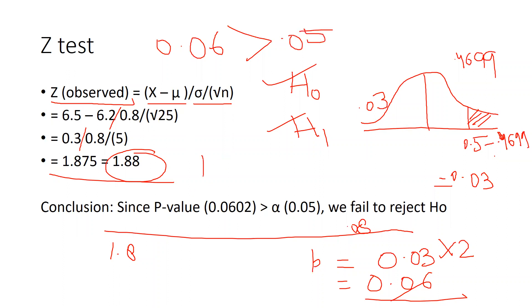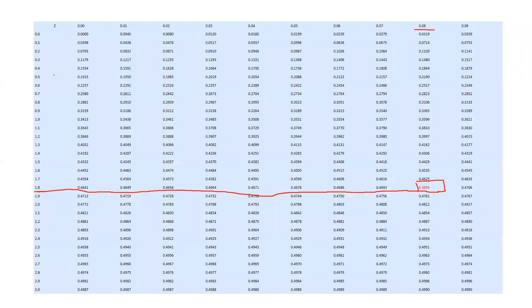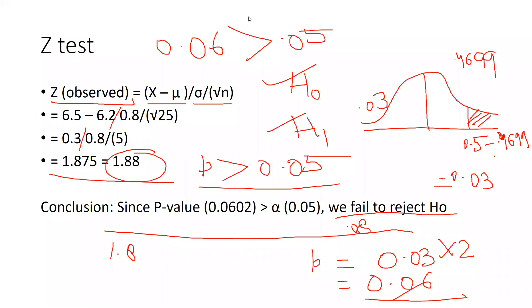The thumb rule states: if your p-value is greater than 0.05, we fail to reject the null hypothesis. Since p-value 0.06 > 0.05, we fail to reject the null hypothesis. This means the management's claim that the average salary is 6.2 lakh per year is correct — the sample data shows no significant difference. I hope how to read the normal distribution Z-table is now clear. Thank you, keep watching!